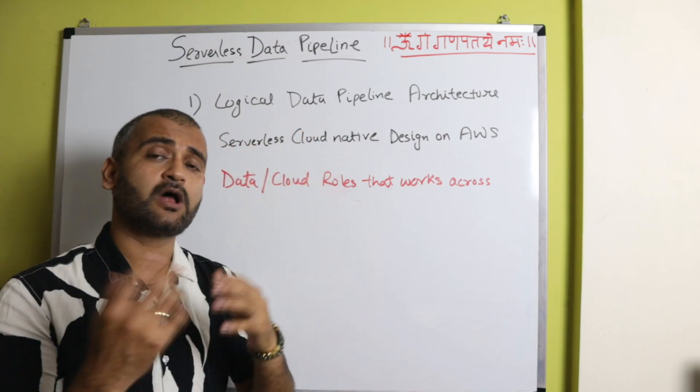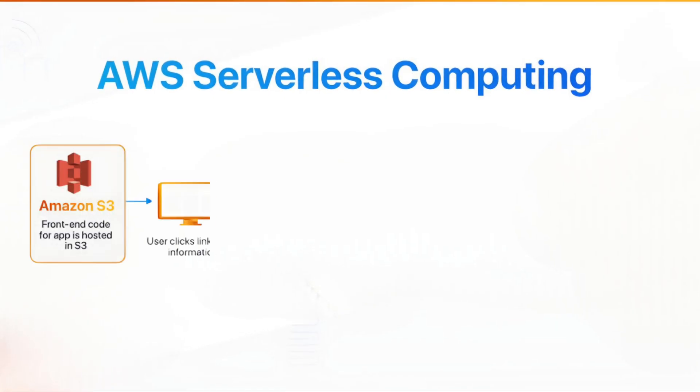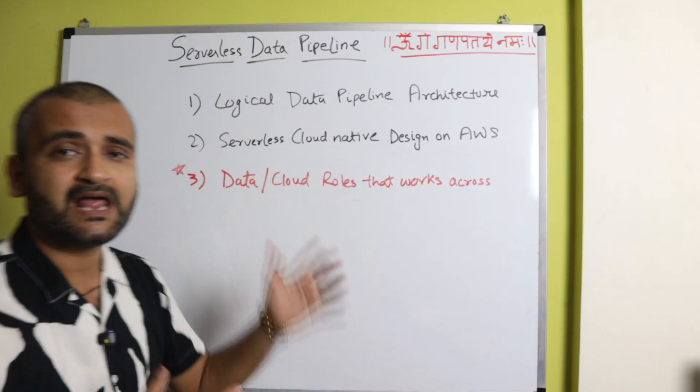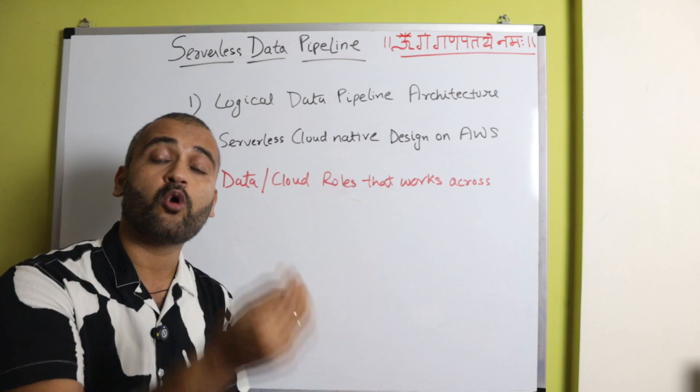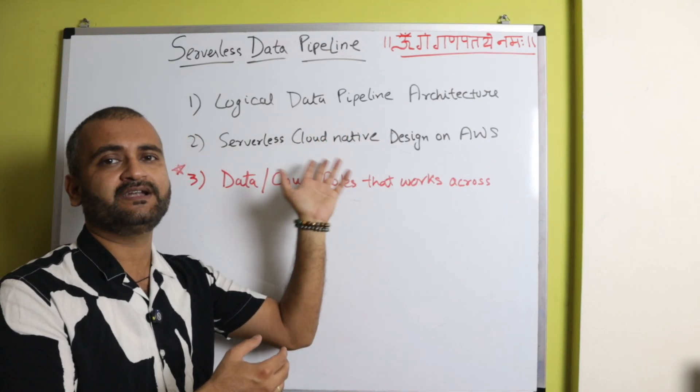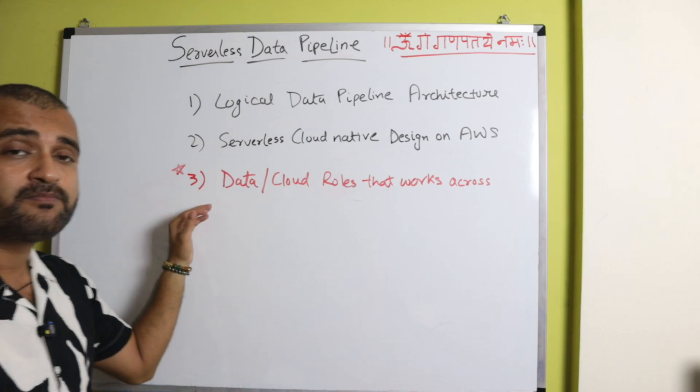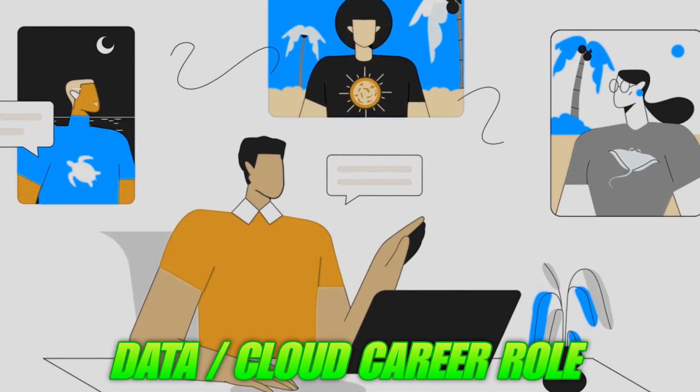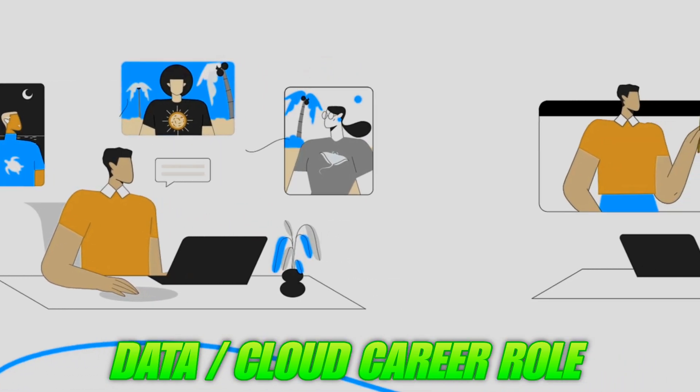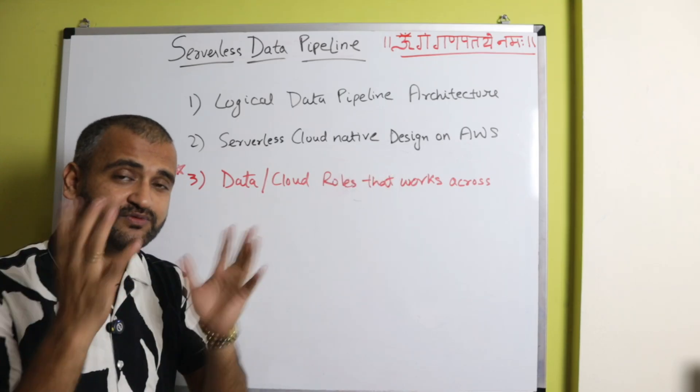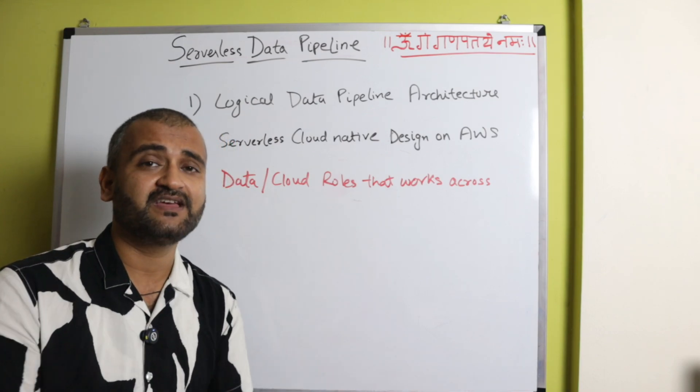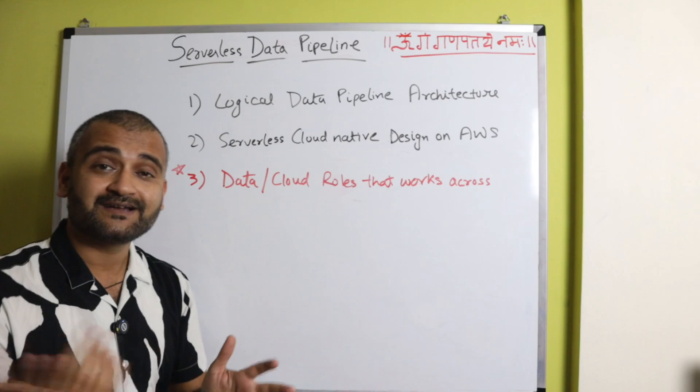Then we will talk about a serverless cloud native architecture. How it will look with actual services. And we will take AWS for that reference. So that will help us understand exactly what tools and what services we will use to deploy this into reality on AWS. And the most important part is we will talk about different data or cloud specific career roles, which sits across this whole platform. So this is going to be very interesting because we will try to see who does what in this whole paradigm. If you are aspiring for a certain career, what you need to learn. So let's get started.